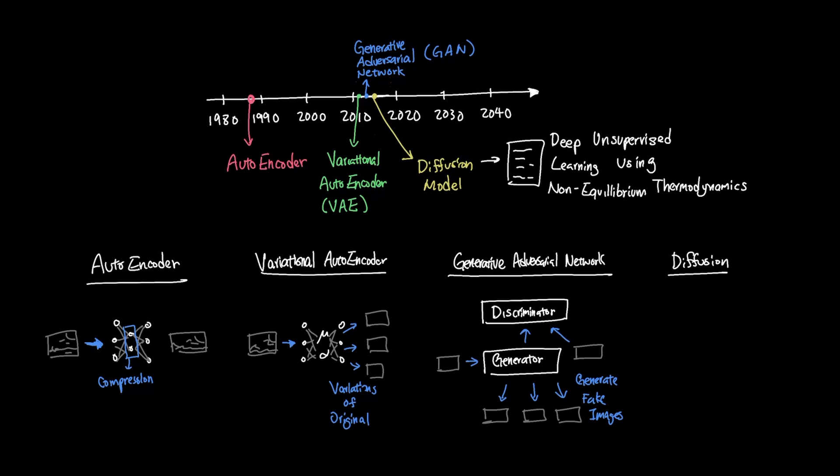The inspiration behind diffusion model was how particles naturally spread out from regions of high concentration to low concentration until everything reaches equilibrium. Unlike the generative adversarial network, where two models are learning from each other, the diffusion model used probabilistic physics by essentially taking an image and adding entropy gradually and teaching the model to reverse it back.